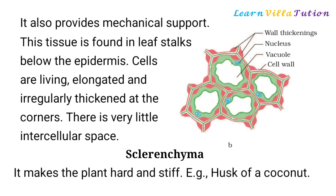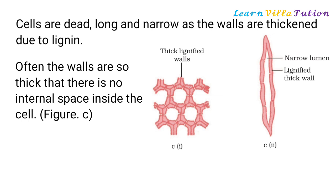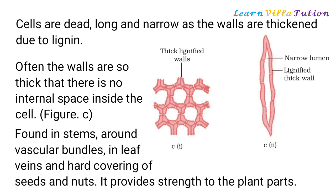Sclerenchyma makes the plant hard and stiff — for example, the husk of a coconut. Cells are dead, long, and narrow, as the walls are thickened due to lignin. Often the walls are so thick that there is no internal space inside the cell. These tissues are found in stems around vascular bundles, in leaf veins, and in the hard covering of seeds and nuts. It provides strength to the plant parts.